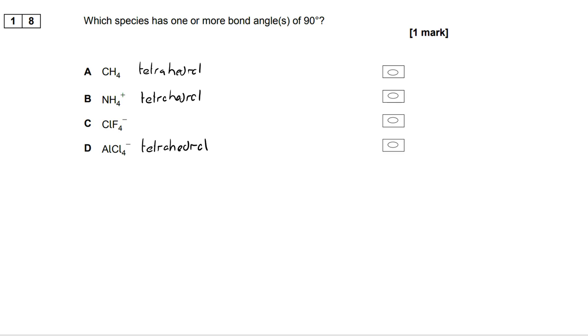And AlCl4 minus where we have aluminium in group three, three electrons in its outer shell plus the one from the negative charge, four bonding pairs, no lone pairs, they are all tetrahedral.